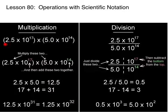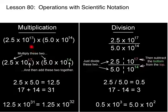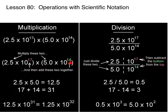When we are multiplying scientific notation numbers, we take the first number of each and we multiply them together. So we're multiplying 2.5 times 5. And then we will multiply 10 to the 17th times 10 to the 14th. When we are multiplying these, what we're really doing is adding the exponents.